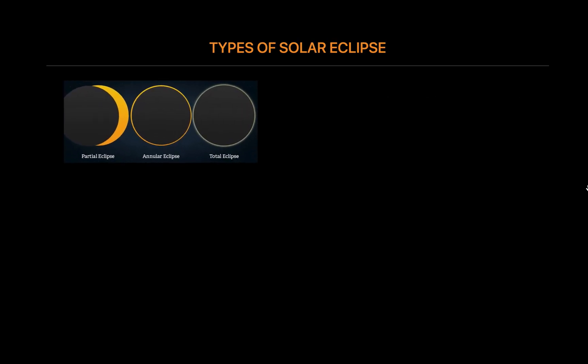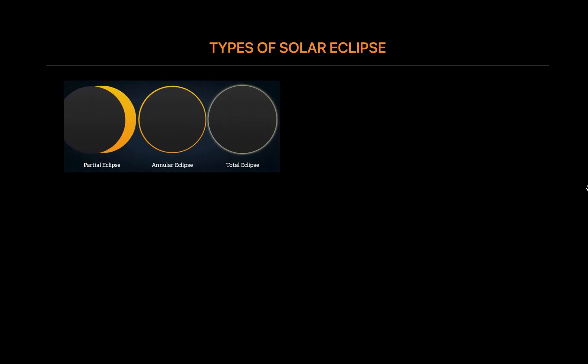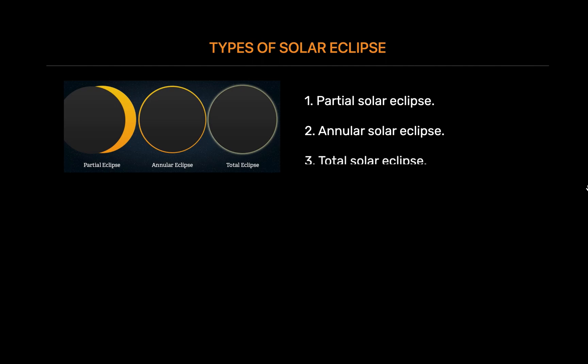Types of Solar Eclipse. There are three main types of solar eclipse: partial solar eclipse, annular solar eclipse, and total solar eclipse.